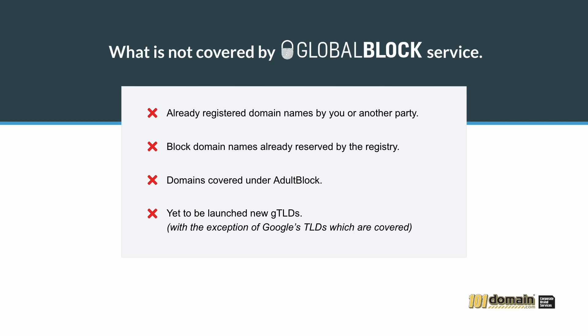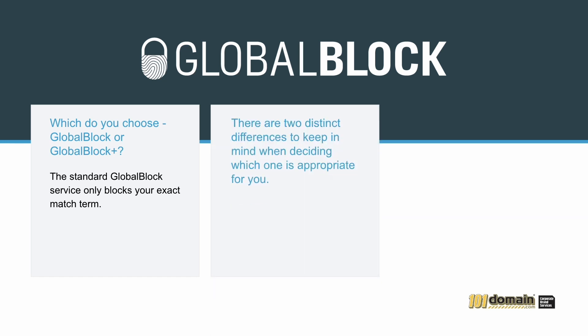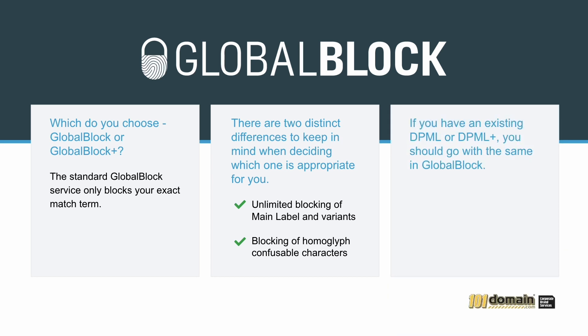Which do you choose — GlobalBlock or GlobalBlock Plus? The easiest way to remember the difference between the two is that the standard GlobalBlock service only blocks your exact match term or label. There are two distinct features that GlobalBlock Plus offers that GlobalBlock does not: unlimited blocking of main labels, and blocking of homoglyph confusable characters. If you have an existing DPML or DPML Plus, you should generally go with the same version in GlobalBlock.